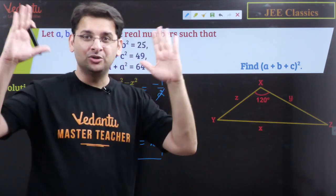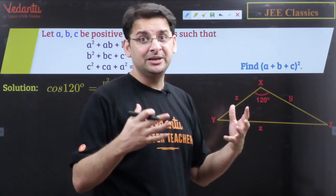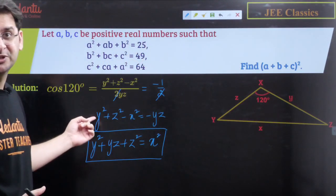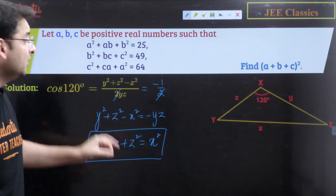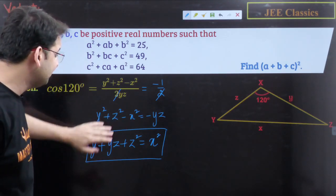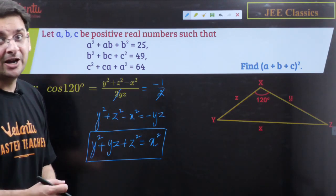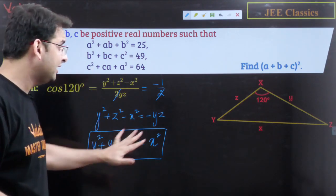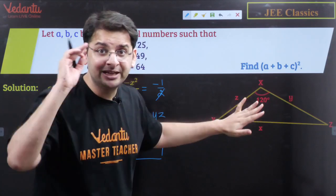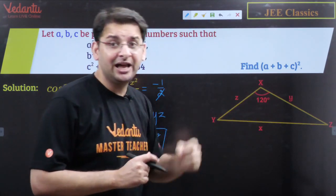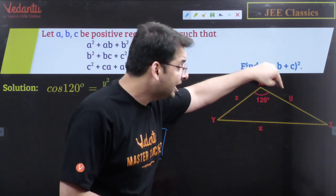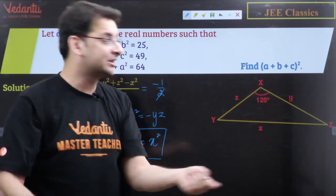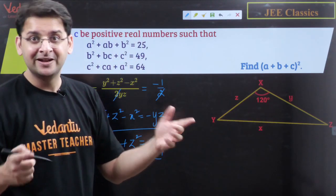So the expressions A²+AB+B², B²+BC+C², and C²+CA+A² can all be generated by the cosine rule. Specifically: X²+Y²+XY, Y²+Z²+YZ. And the key lemma is — if there is a triangle X, Y, Z where the included angle B is 120 degrees, with sides Y and Z, then Y²+Z²+YZ equals X², the square of the opposite side.